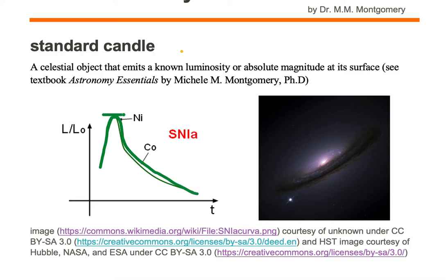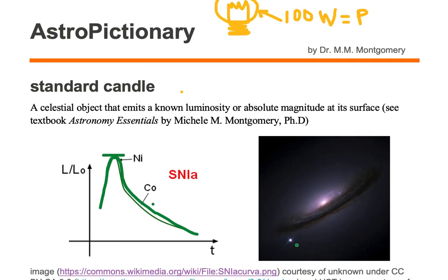The peak in the luminosity curve is based on the decay of nickel and later on by the decay of cobalt. Because it's based on a known quantity, the luminosity over time is known at the peak, making this Type 1a supernova a standard candle — at the peak in the middle.